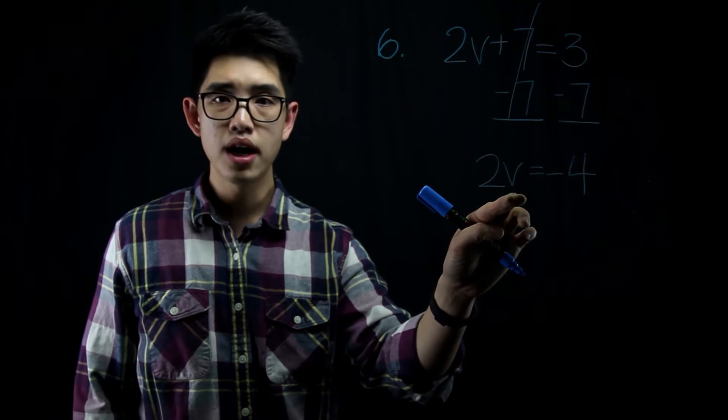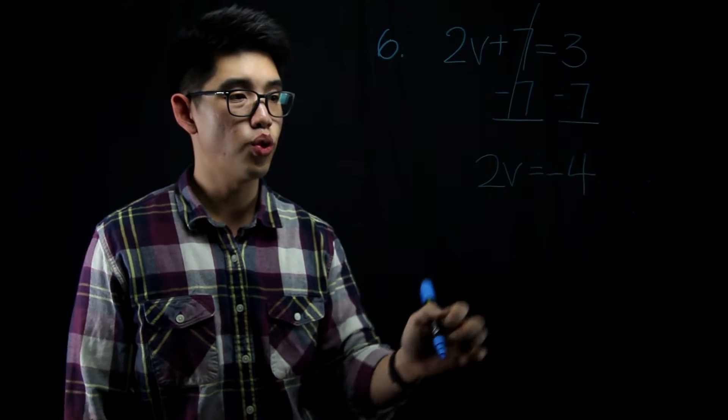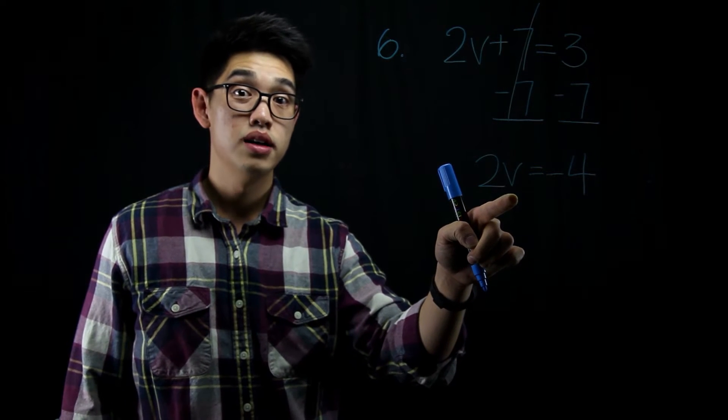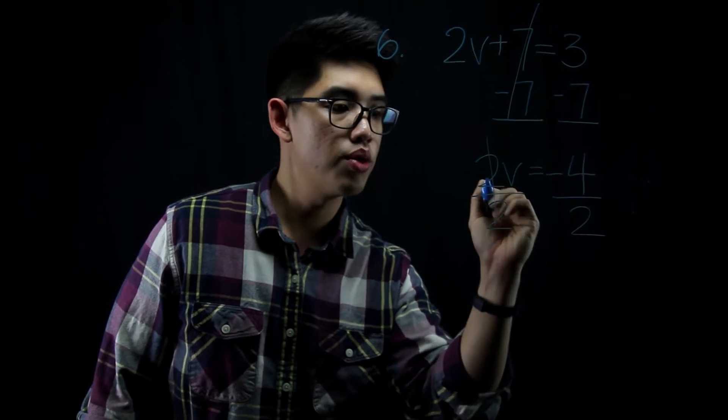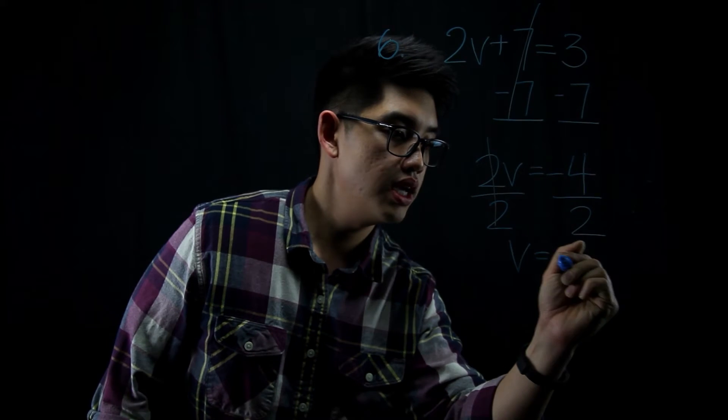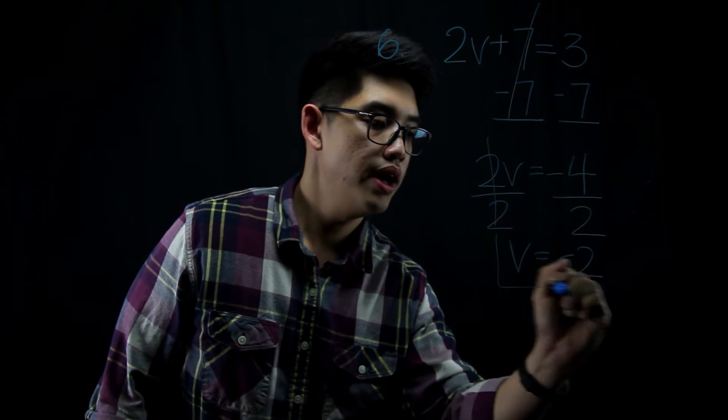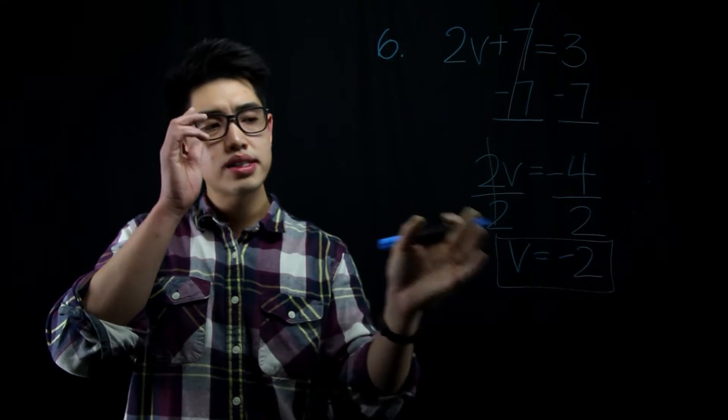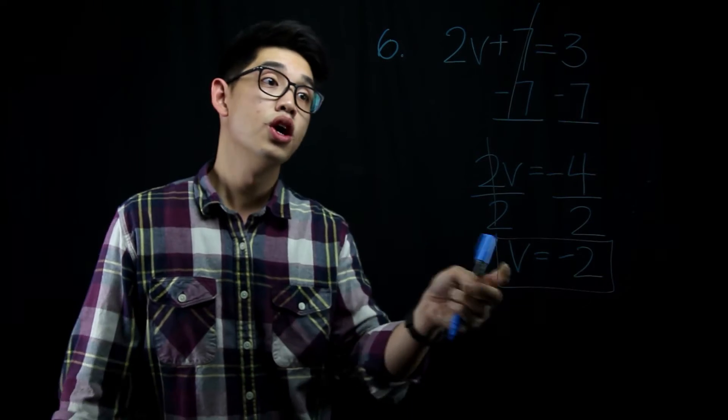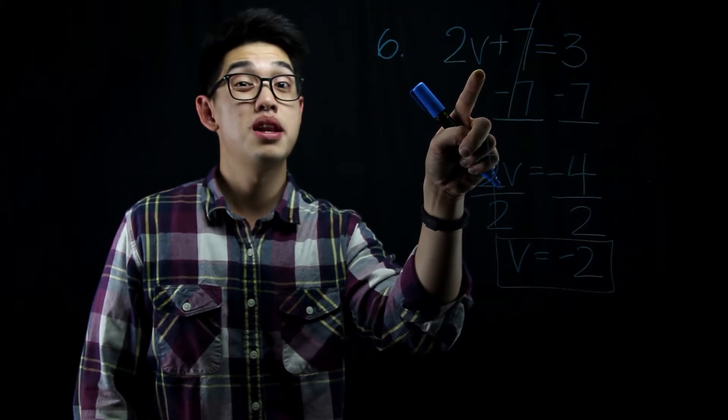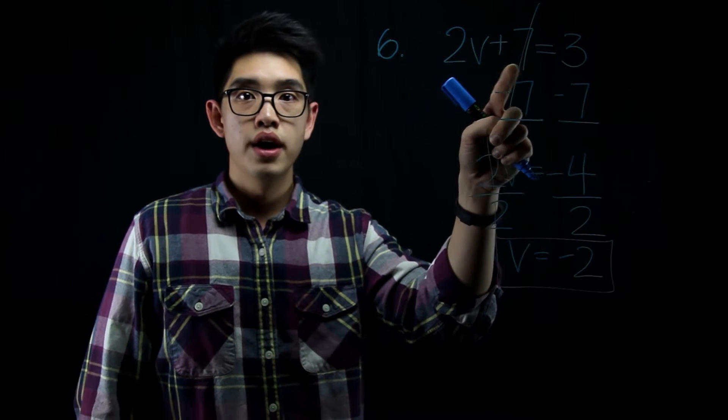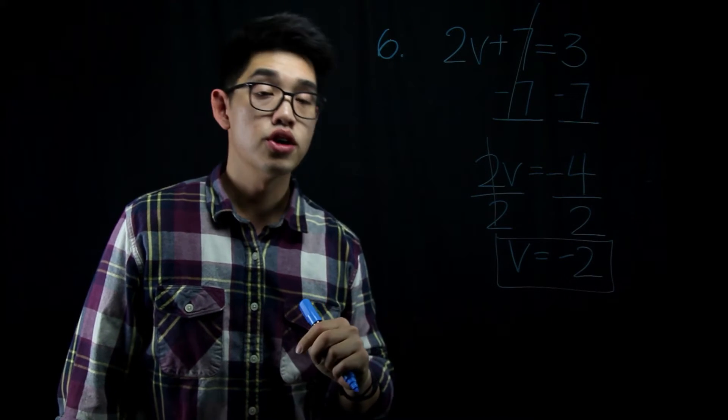I have 2 times a number, 2 times v equals negative 4. I can divide both sides by 2. If I divide this side by 2, I've got to divide this side by 2. That will cancel out, and v will give me negative 2. Now, if you really want to see if your answer is correct, we can plug it back in. 2 times negative 2, that's going to be negative 4. Negative 4 plus 7, it's 3. So my answer is correct.